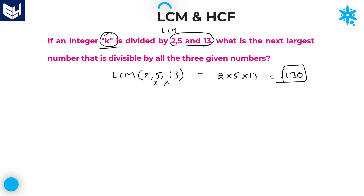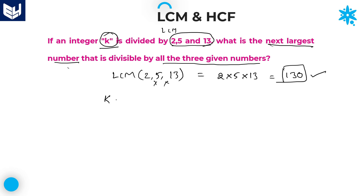The question asks: what is the next largest number that is also divisible by all three given numbers? Since k is exactly divisible by 130, and we need the next such number, we simply add the LCM: k + 130. So k + 130 is the next largest number which is exactly divisible by 2, 5, and 13.